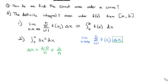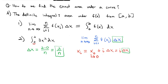The x_i piece: we start at the initial x point and add i times delta x. Since the left endpoint is 0, this is just i times delta x. We know delta x is 2 over n, so x_i equals i times 2 over n, or 2i over n.